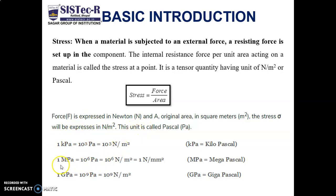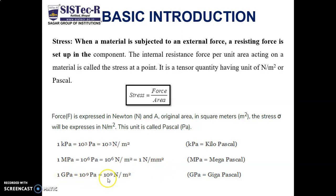If given in megapascal, 1 megapascal is equal to 10 to the power 6 Newton per meter square. 1 gigapascal is equal to 10 to the power 9 Pascal, that is, 10 to the power 9 Newton per meter square. Now, the types of stress.